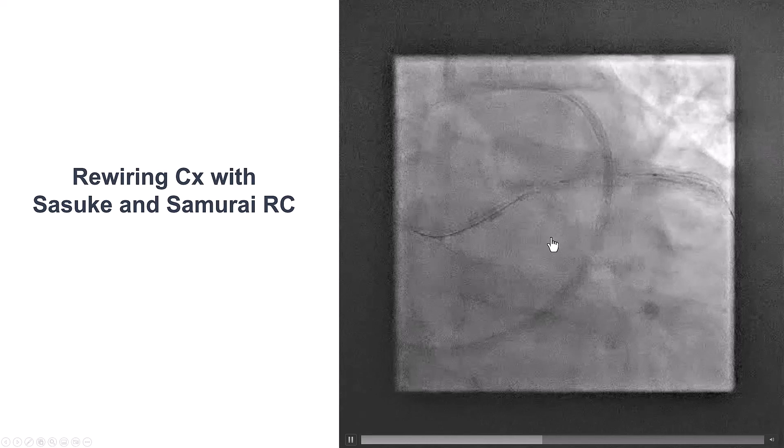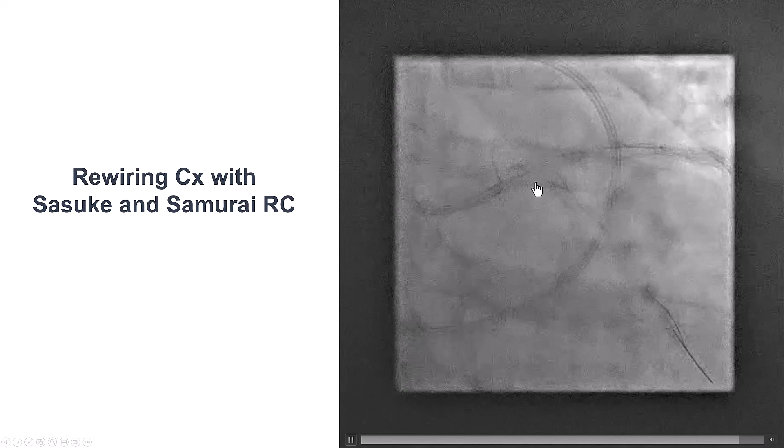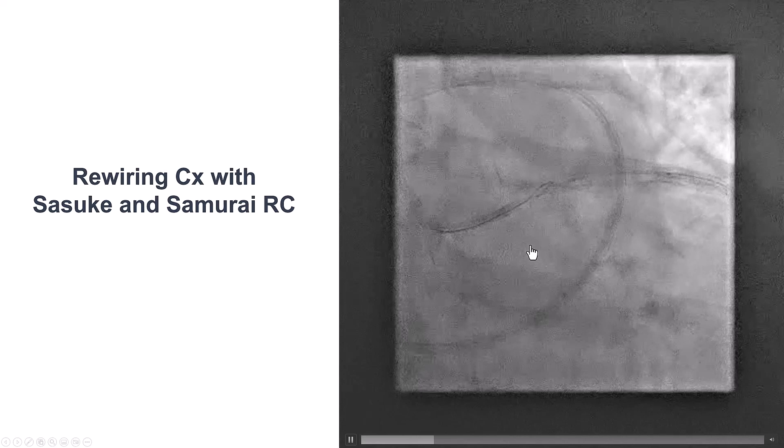The lesson is that whenever you have difficulty rewiring into a side branch after stenting the main vessel, one option is to use a dual lumen microcatheter. Another one is different wires and different angles, such as a polymer-coated wire. And this was the final kissing balloon inflation into the left main.